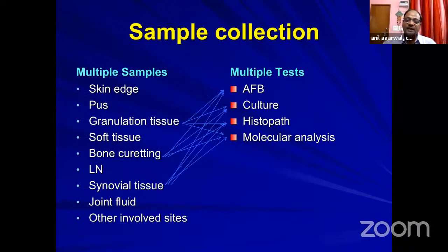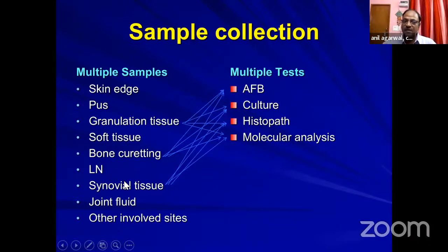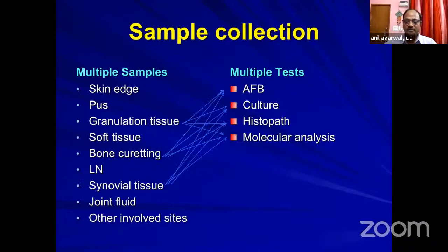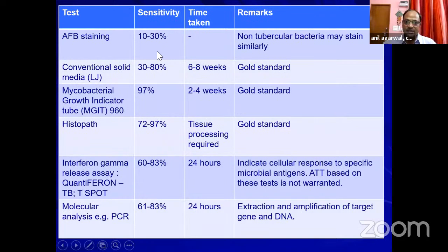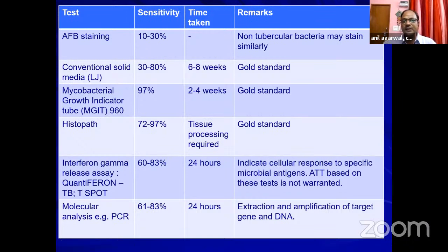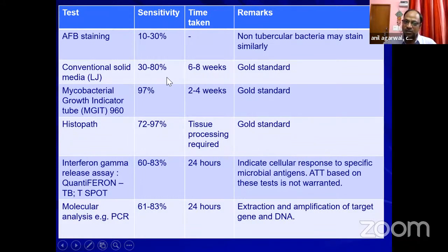We obtain at least 9 to 10 samples for every case suspected of tuberculosis: from the skin edge, pus, granulation tissue, soft tissue, bone curettings, lymph node, and in joint cases — synovial tissue, joint fluid, and all other involved sites in one go. When you aspirate from the center and send for AFB staining, positivity rate is just 10 to 30%. Solid culture media sensitivity varies between 30 to 80%. Combined success rate varies from 40 to 100%, but if you obtain multiple samples, any one of them will reflect the bacteria.